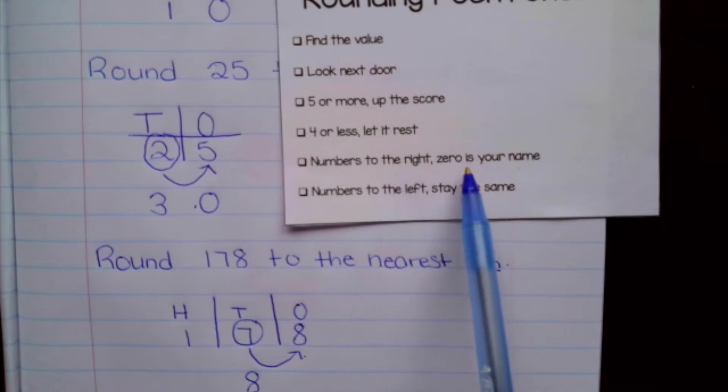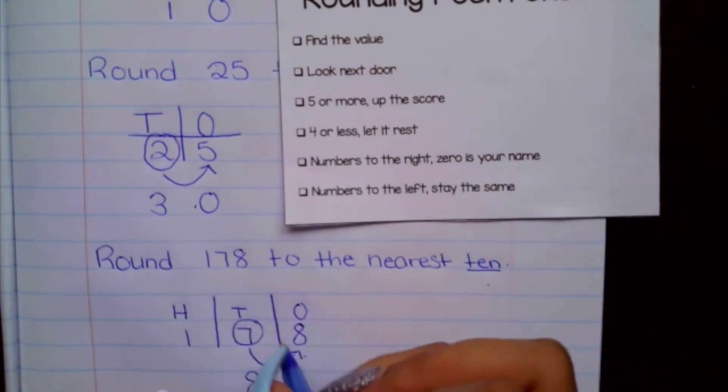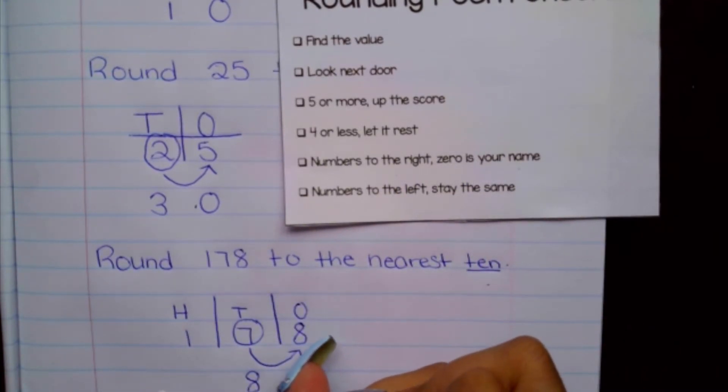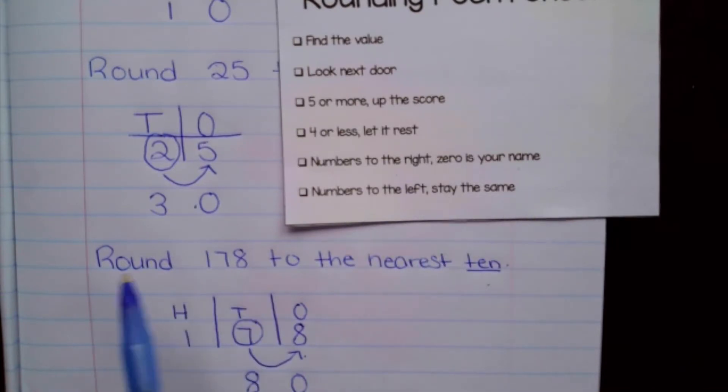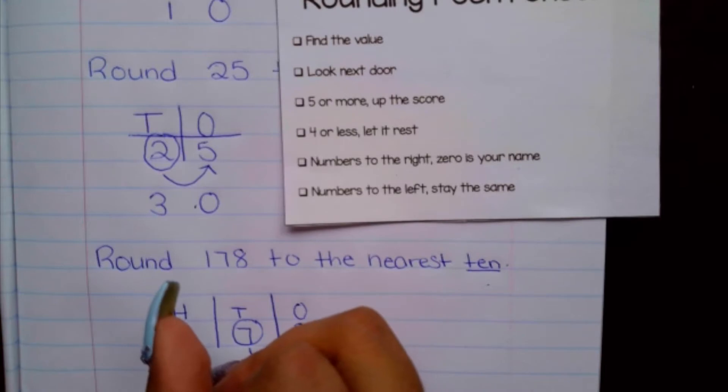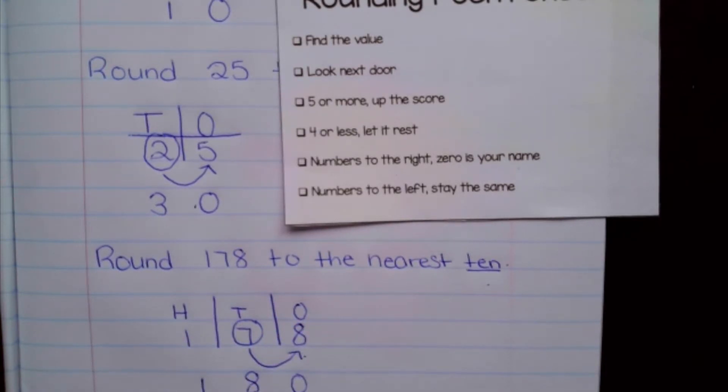And then it says numbers to the right, zero is your name. So this gets changed into zero. And then numbers to the left stay the same. So this digit in the hundreds place just stays the same. So my answer would be 180.